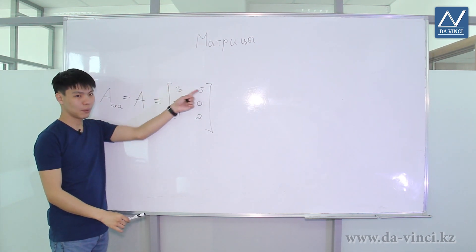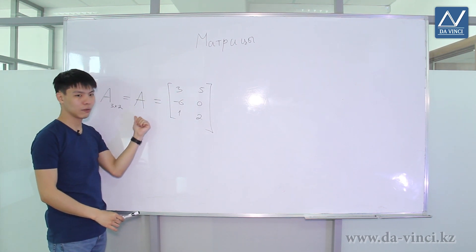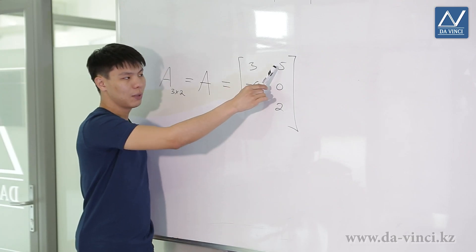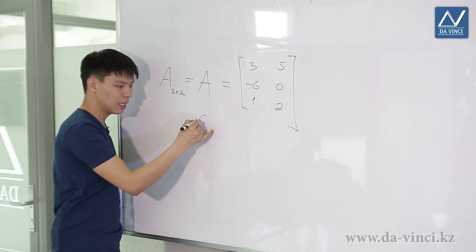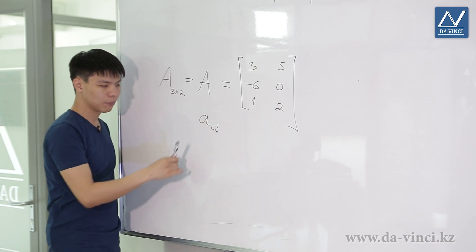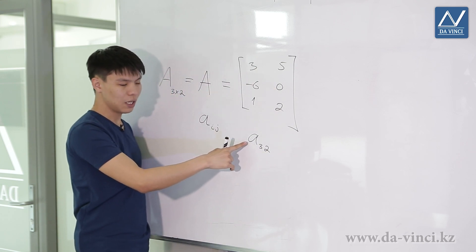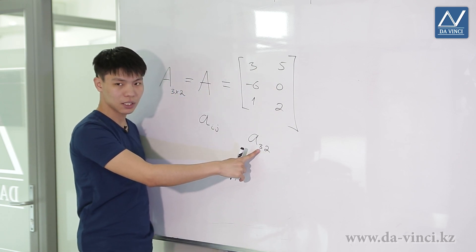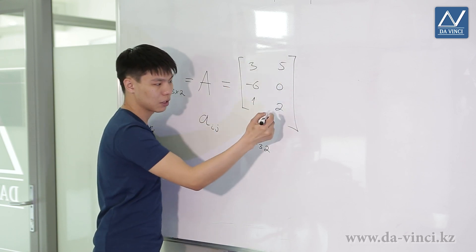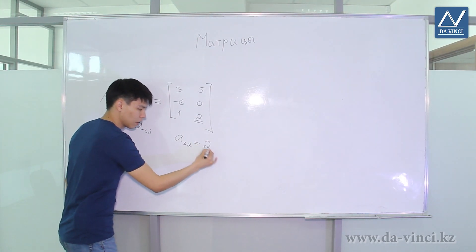The elements of a matrix are usually denoted by a small Latin letter with certain indexes i and j. For example, A with index 3, 2 means the element of the matrix that is in the third row and the second column. Let's find this element — the third row and the second column — that is the element 2. So A_{3,2} equals 2.